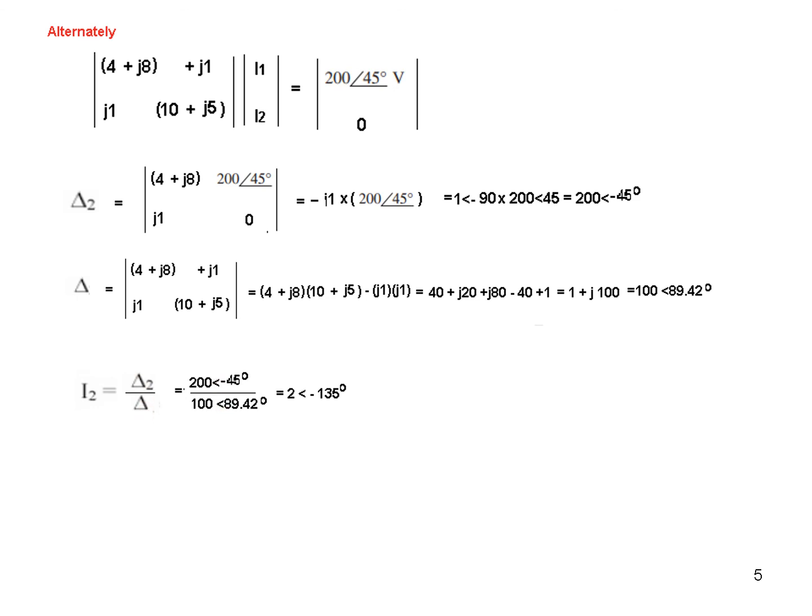And so I2 will be delta 2 over delta. Putting in the values, this will be 2 minus 134.42 something. We just approximate it to be minus 135 degrees. And so V0 is 10 times I2, so it is 20 angle minus 135 degrees.